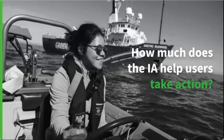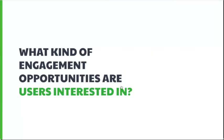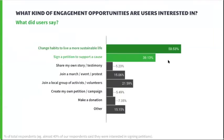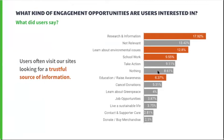Now that we've identified why users can't find specific information, let's see how the current information architecture helps them take action. From global surveys, the actions that showed the most interest were changing habits to live a more sustainable life and signing petitions to support a cause. Users often visit the sites looking for a trustful source of information they will later use for schoolwork, research, and to get informed and raise awareness among their networks.